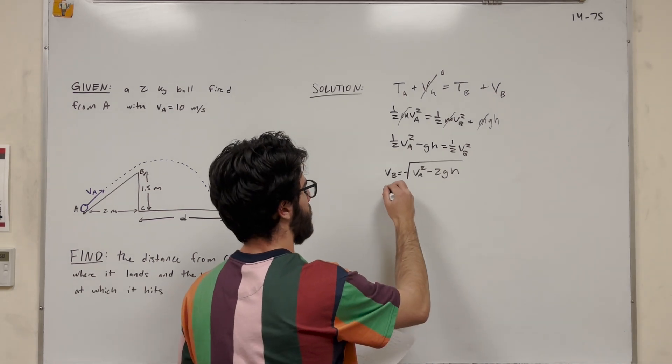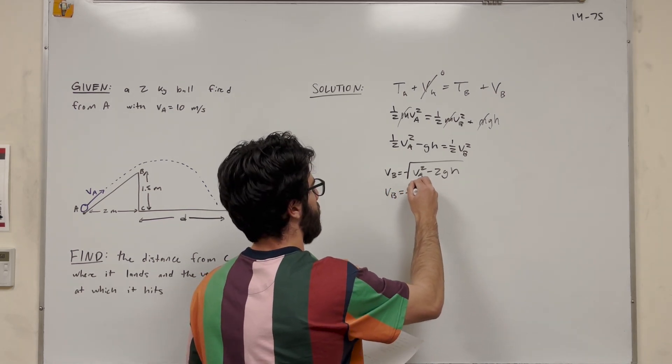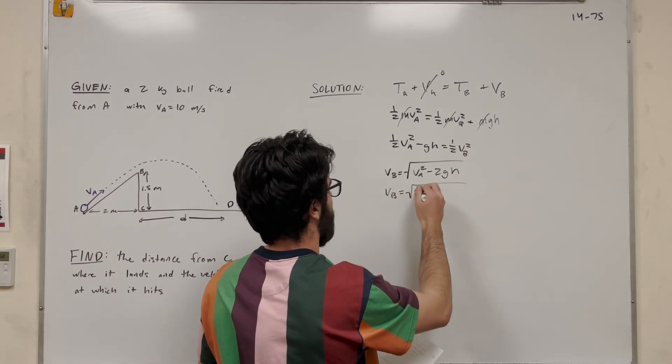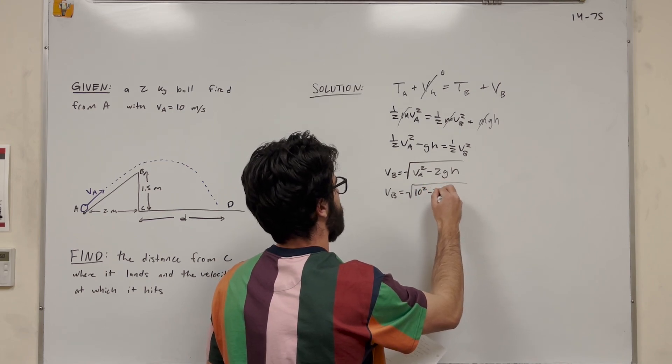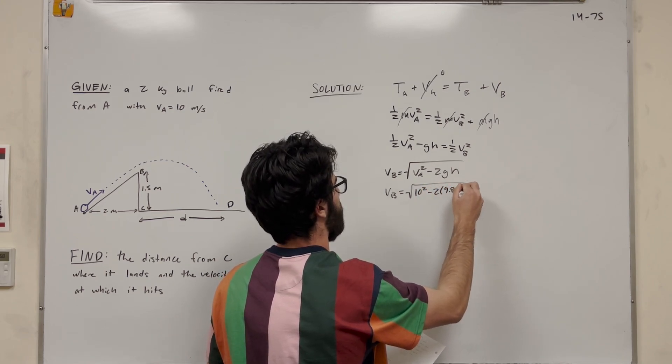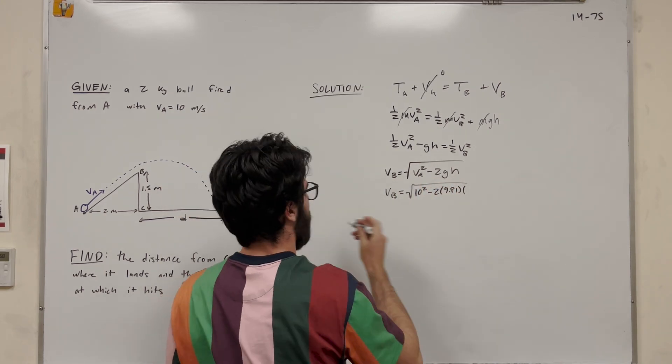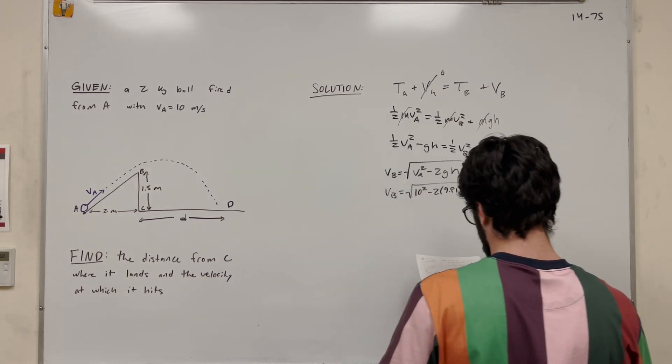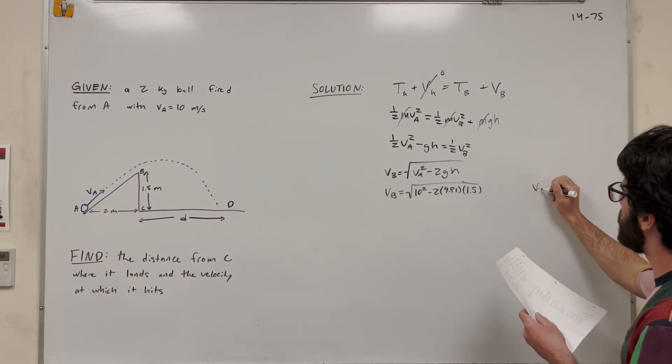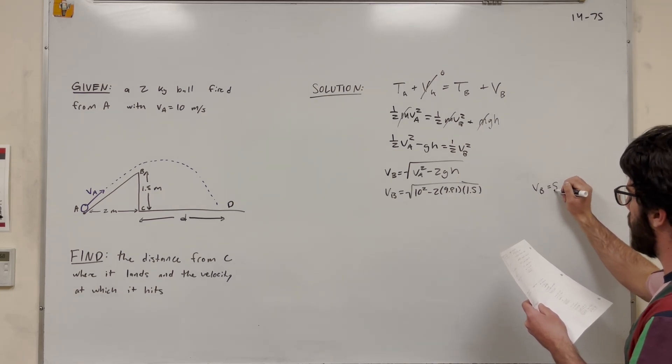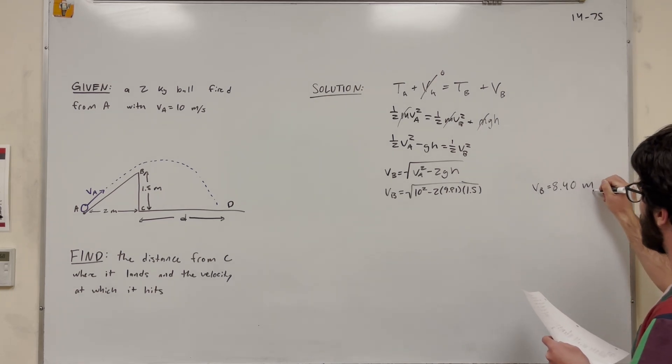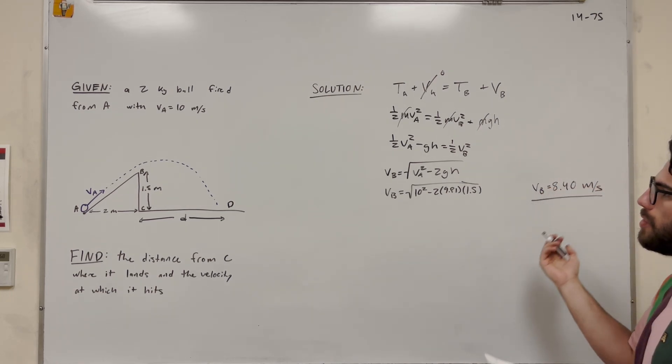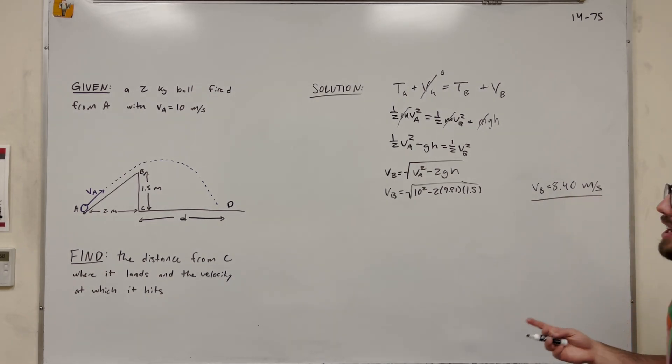So let's plug in our numbers. So velocity of A is 10 meters a second, so 10 squared minus 2. Gravity is 9.81. Height is 1.5 meters. We go up the hill, 1.5. So then we find that velocity of B is equal to 8.40 meters per second. So we lose, you know, 1.6 meters per second going up that hill.